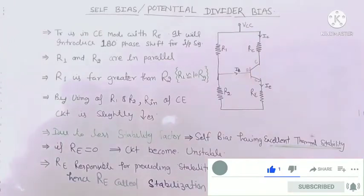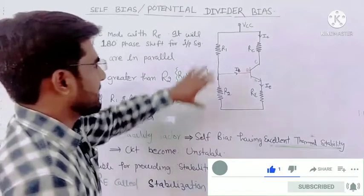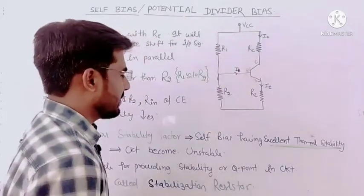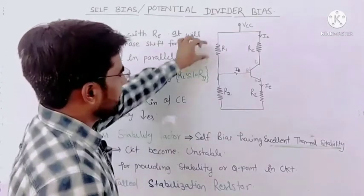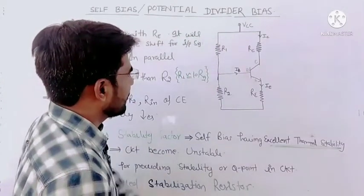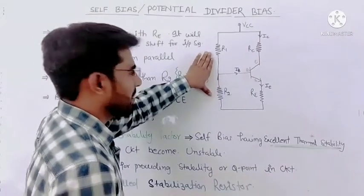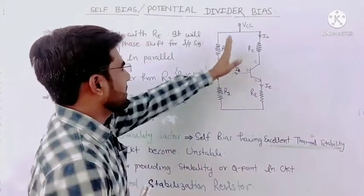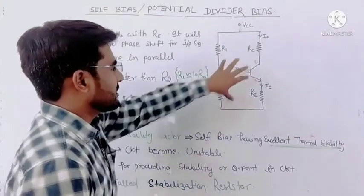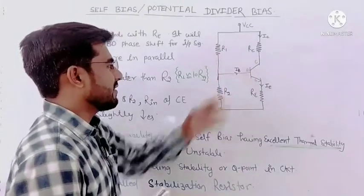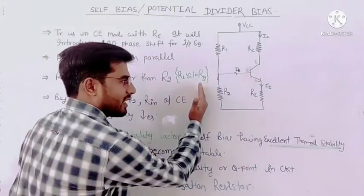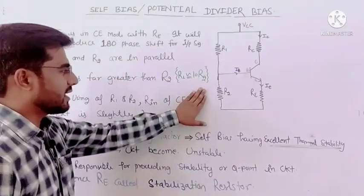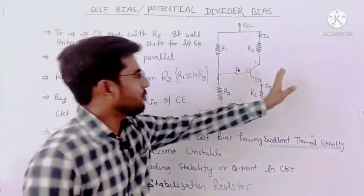We can see the circuit diagram — a simple collector resistor and emitter resistor — but there are two extra resistors R1 and R2 which are connected. We will break this circuit and simplify it. After simplification, we will apply KVL on the input side. With the help of input side KVL we can find out base current, collector current, and emitter current.